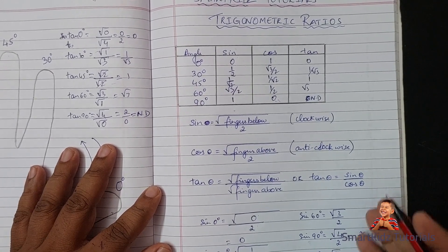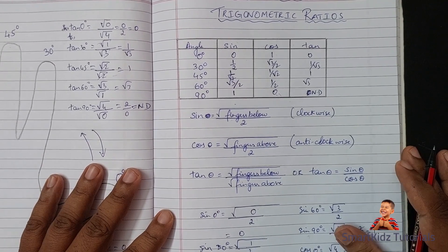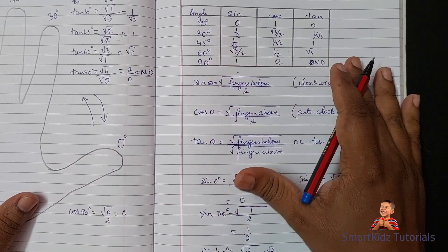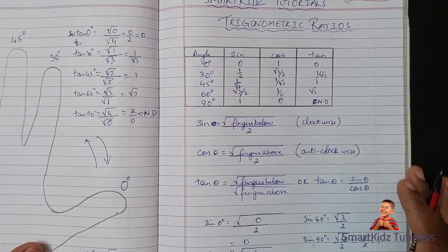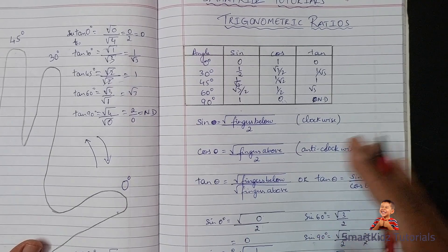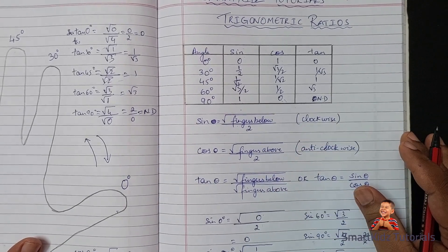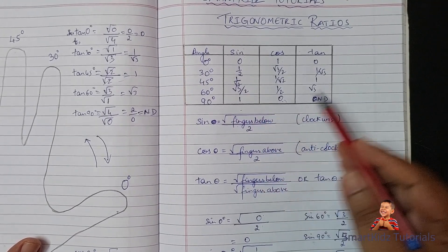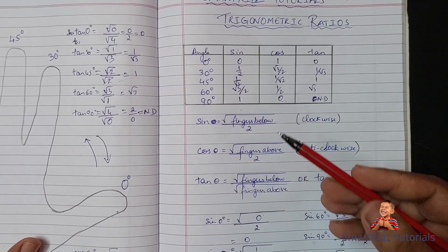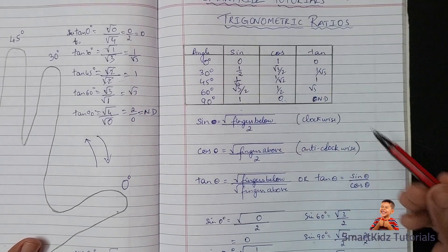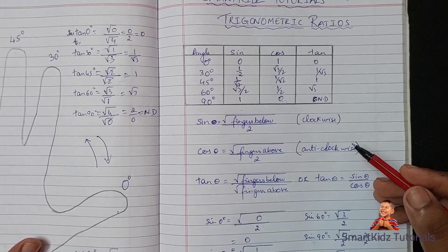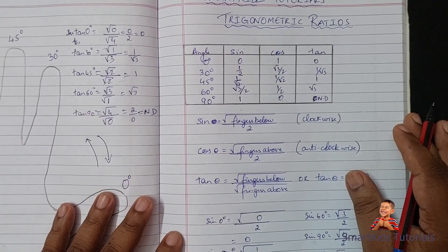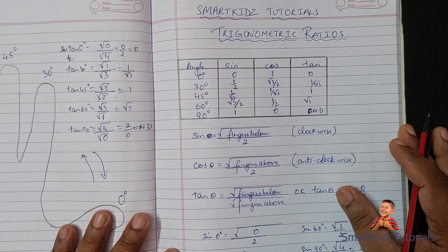I hope this method has been useful for you to remember the sine, cos, tan table — the trigonometric ratio table. As I said, for class 10 you can build on this to fill up the rest of the table — that is sec, cot, and cosec — which are the reciprocals of each of them.